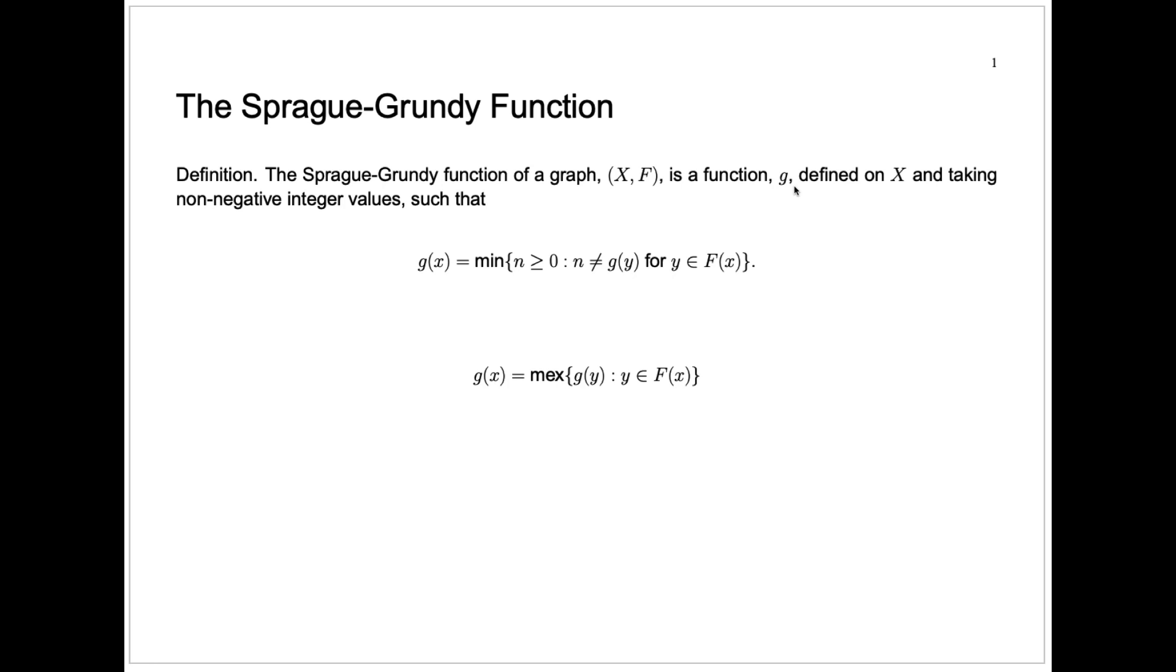The Sprague-Grundy function is a function on a directed graph. So we'll call the function g, and this function will define for each node in that graph some non-negative integer. And the way it will do that is given here. g of x, x is a node in the graph,